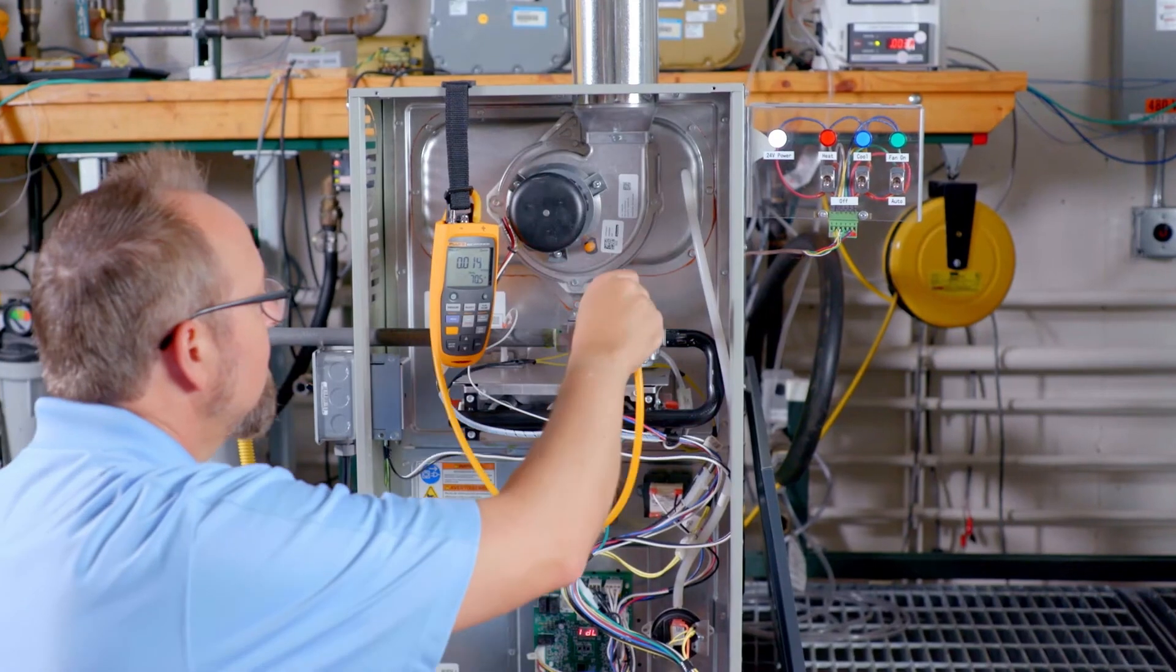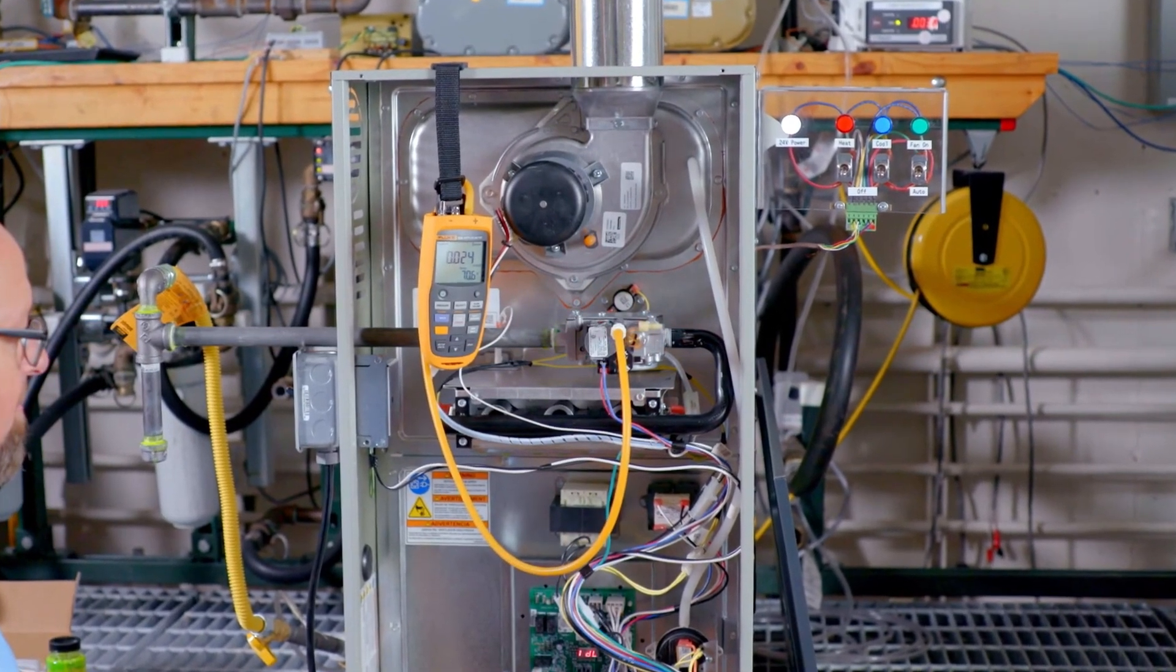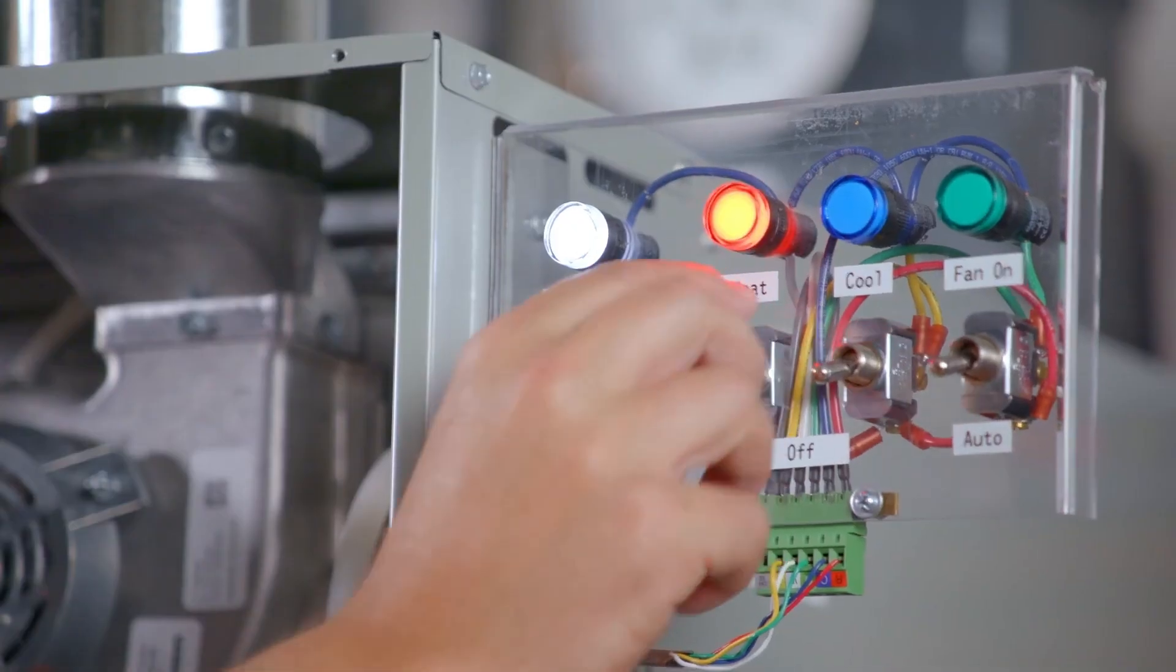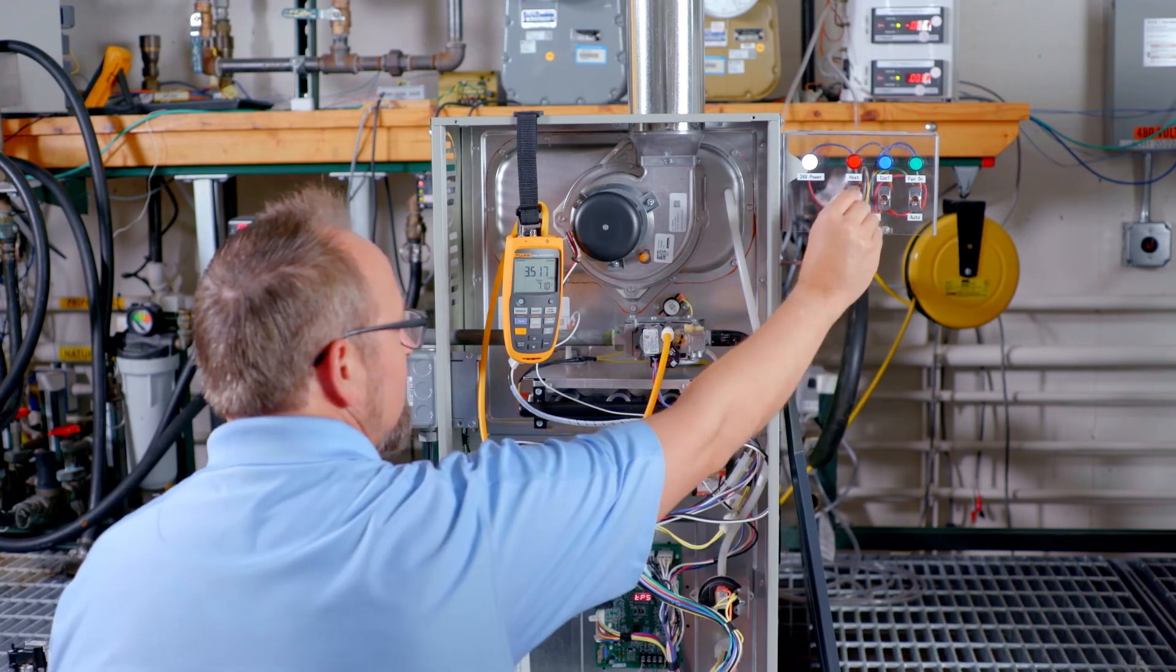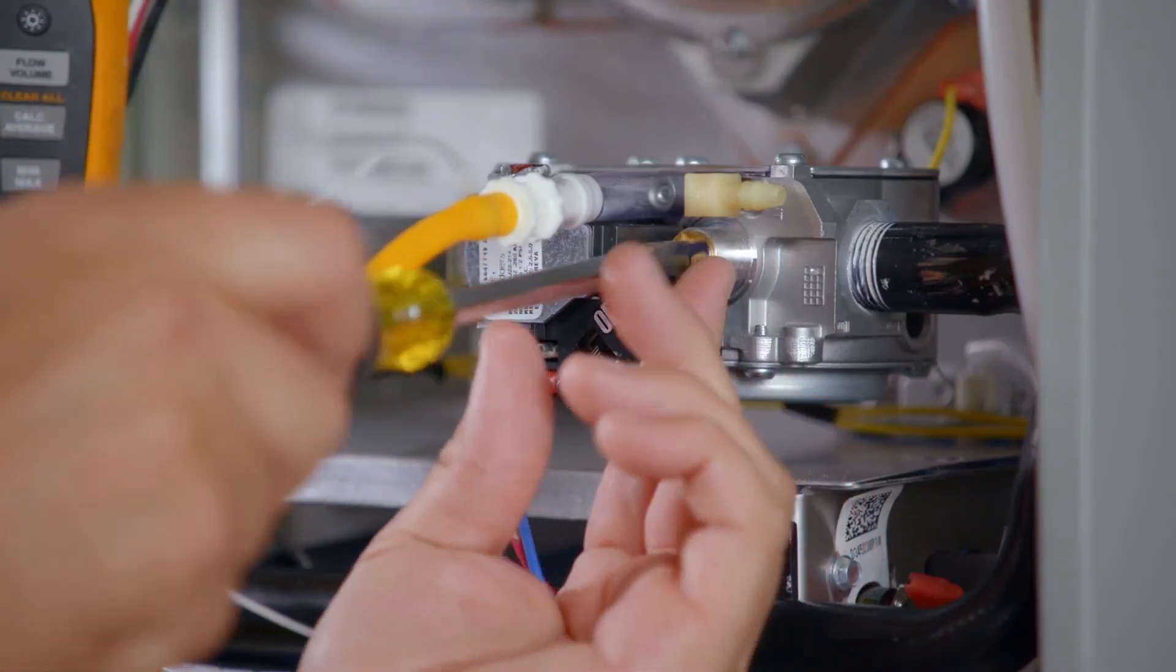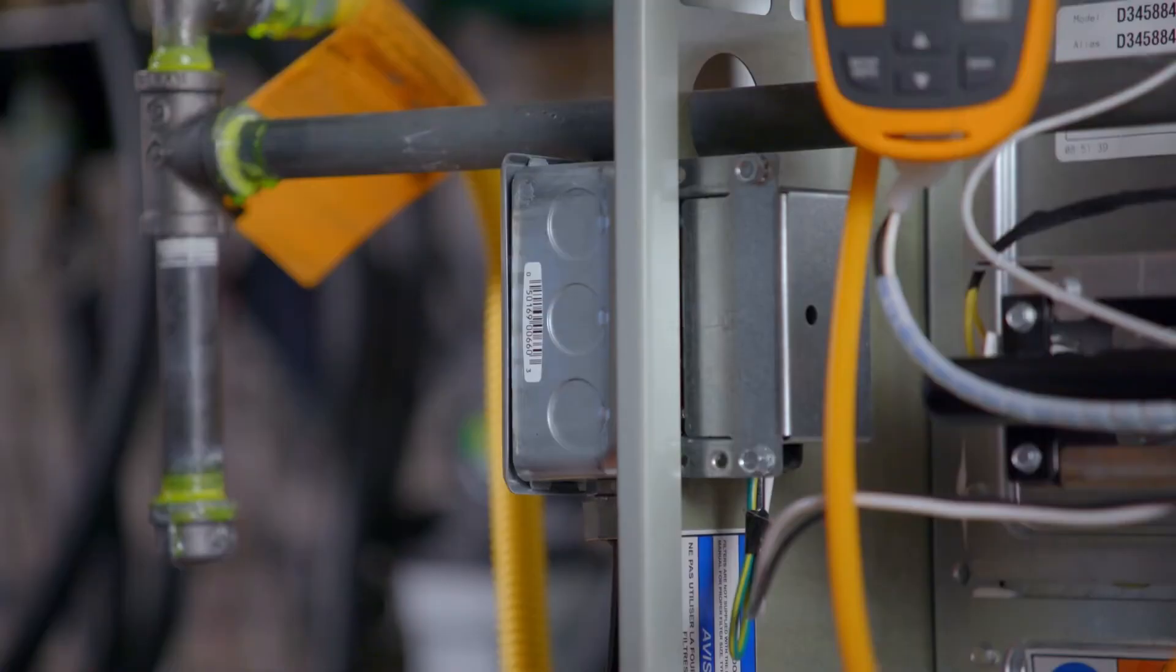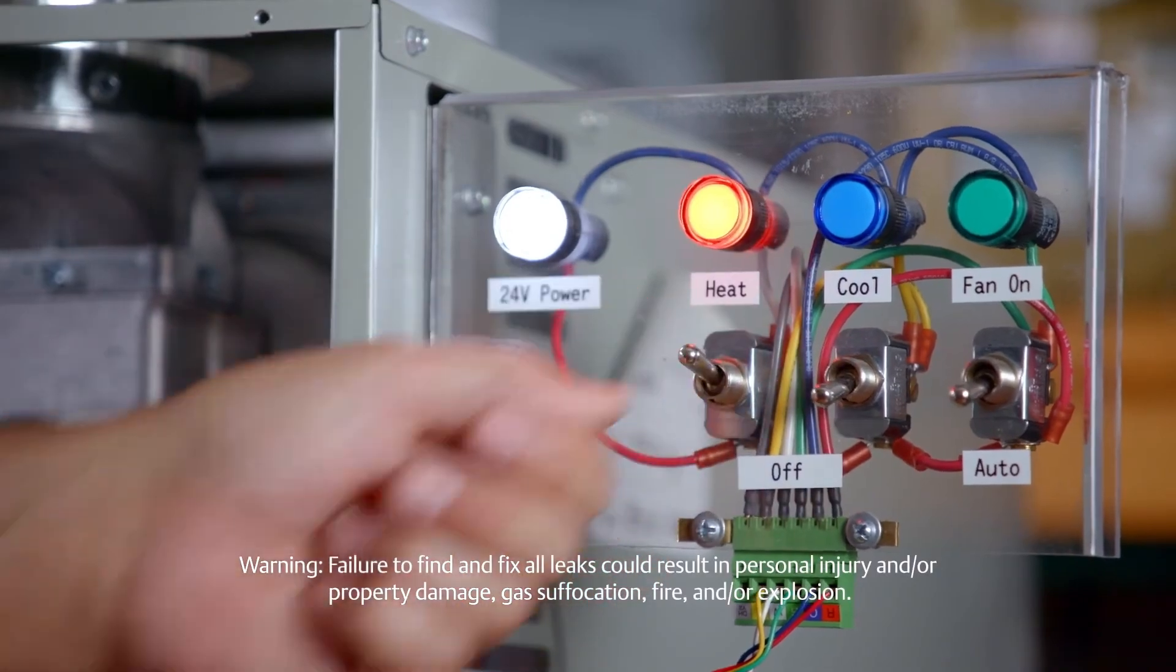Once the gas pressure is set, finalize any additional tests desired and terminate the call for heat. Turn power and gas back off. Replace the regulator cover screw. Disconnect the gas manometer and turn the outlet pressure test screw clockwise to seal the pressure port. Restore the electrical power and gas to the unit. Make a call for heat and wait for the gas valve to be energized.